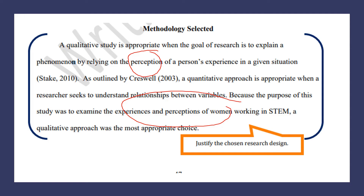Because the purpose of this study was to examine the experiences and perceptions of women working in STEM, a qualitative approach was the most appropriate choice. This is the justification — the researcher justifies the chosen research design and why a particular research design has been applied in this particular research topic or dissertation.